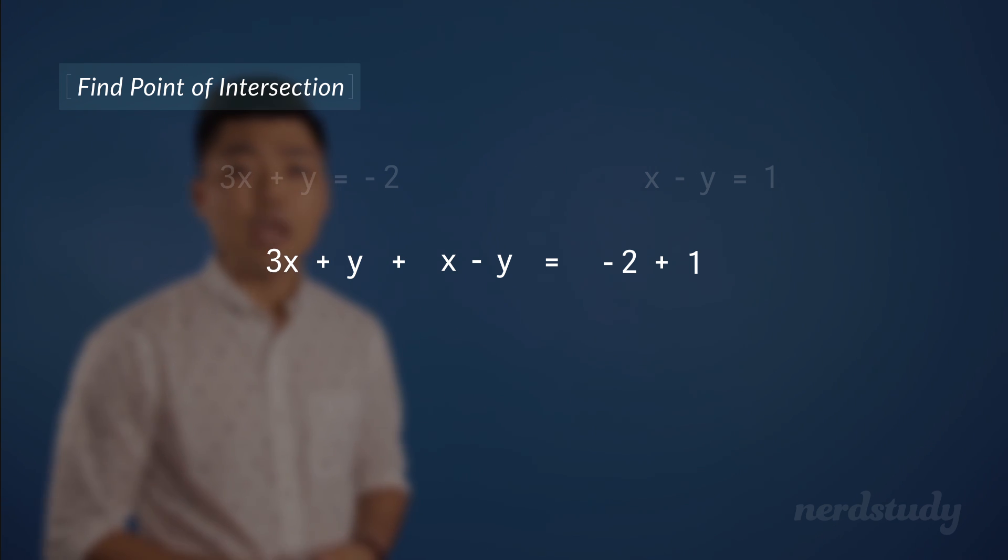Alright, so all we have to do from here is simplify this. We can see that we've got plus y and minus y on the left side, which would cancel each other out, leaving us with 3x plus x equals negative two plus one. Now if we simplify both sides, we get 4x equals negative one. Let's divide both sides by four to isolate x and get x equals negative one over four.